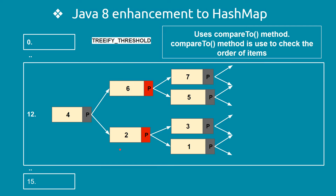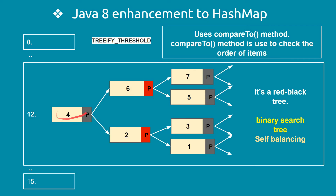This tree is called a red-black tree. It is a binary search tree and also a self-balancing tree. To summarize: when the number of nodes reaches the treeify threshold, the linked list is converted to a tree. JVM uses the compareTo() method for comparison. The tree is a red-black tree, a binary search tree, and a self-balancing tree. With this, you are ready for all interview questions related to HashMap.